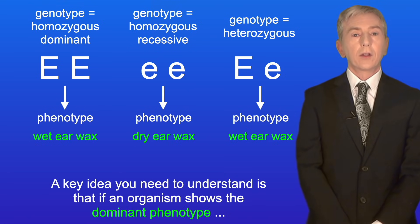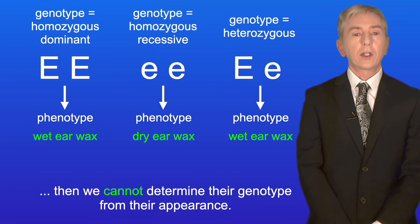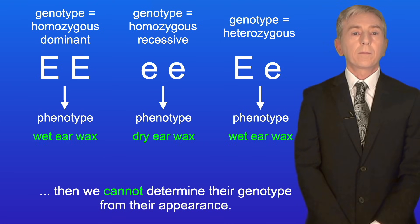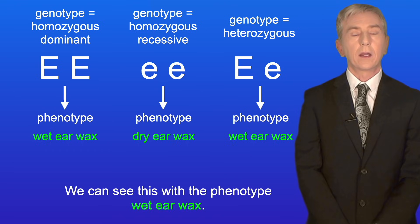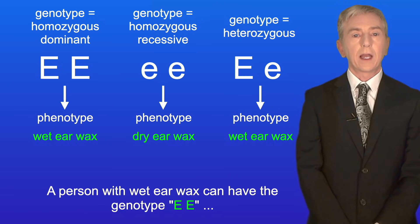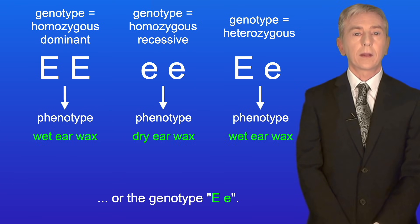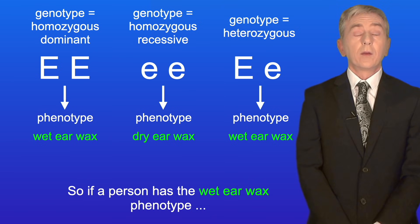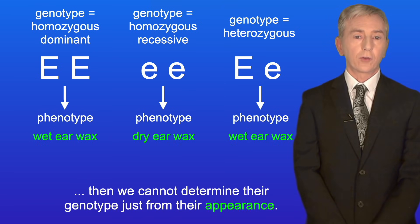A key idea you need to understand is that if an organism shows the dominant phenotype, then we cannot determine their genotype from their appearance. We can see this with the phenotype wet earwax — a person with wet earwax can have the genotype EE or the genotype Ee. So if a person has the wet earwax phenotype, then we cannot determine their genotype just from their appearance.